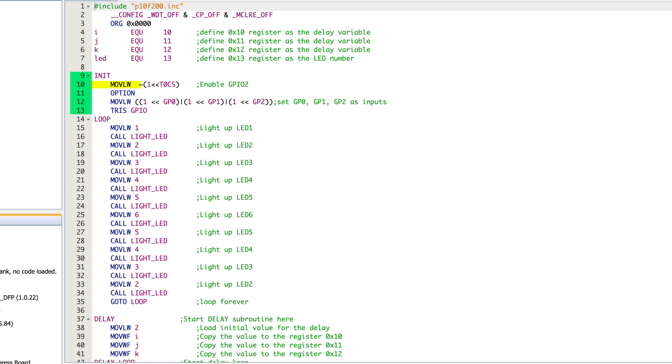And then we get into the actual loop itself, which is just lines 14 through 35. And you'll notice all of these are very straightforward. It's move literal to working register one, call light LED, move literal to working register two, call light LED. And it does that from one to six, and then back down to two. All you're doing is basically putting a number in that working register and then calling the light LED subroutine.